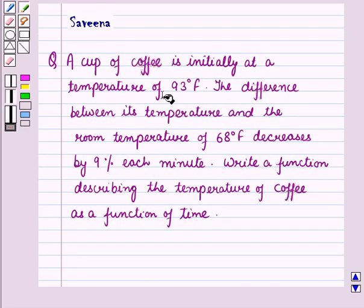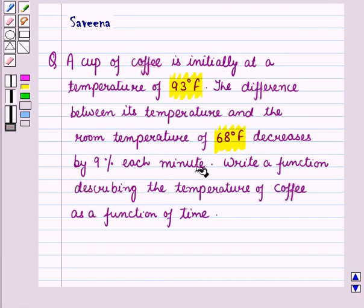Now let us start with the solution of the given question. We are given the initial temperature of coffee is 93 degrees Fahrenheit and the room temperature is 68 degrees Fahrenheit. It is given that the difference between the room temperature and the temperature of coffee is decreasing by 9% each minute.